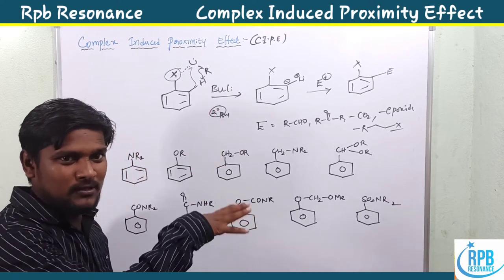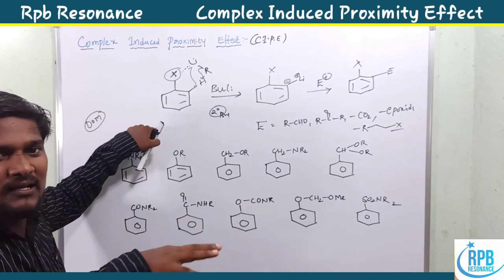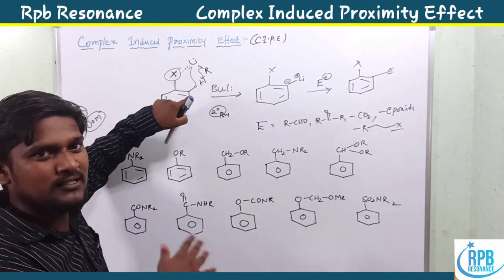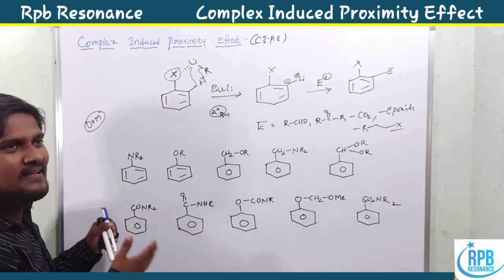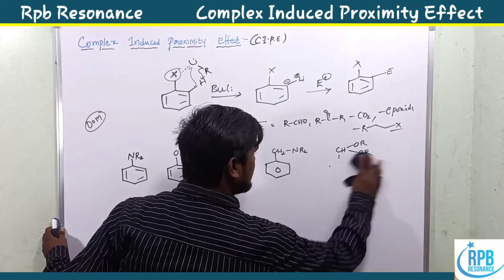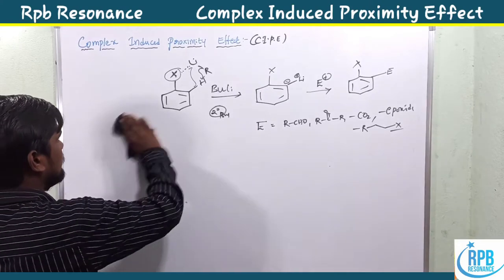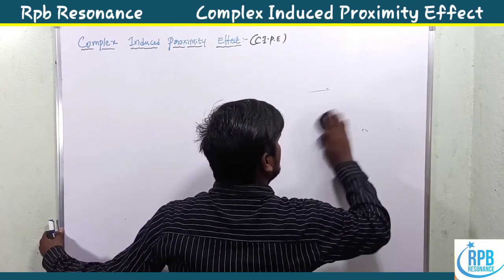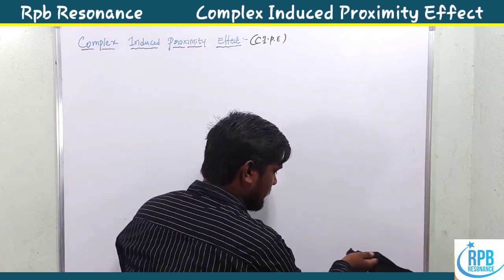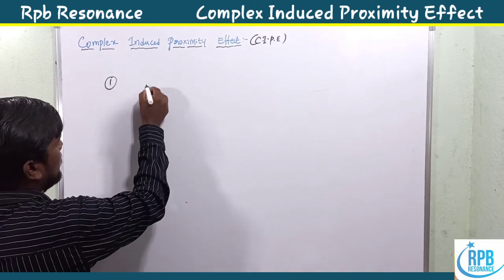Simply, CIPE is the abstraction of a proton by organolithium reagents from aryl aromatic compounds — either heterocyclic or heteroaromatic compounds — it is also possible for heteroaromatic compounds. Now let's move on to some of the exceptions in CIPE. After discussing the exceptions, I'll draw a chart for CIPE examples.